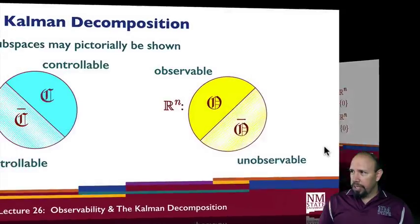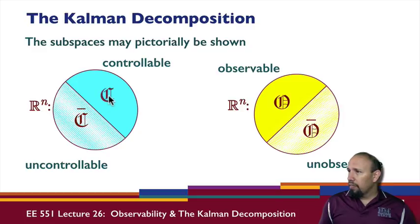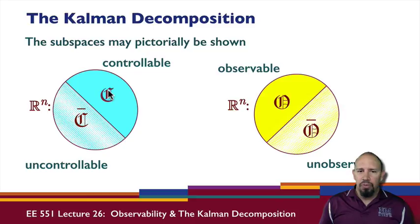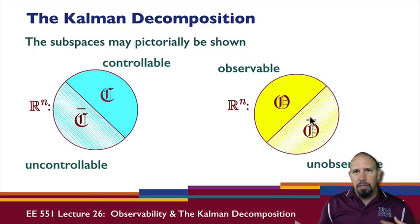We can pictorially draw these subspaces. In terms of controllability, we have the controllable subspace and the uncontrollable subspace — shown here in half, though in general they wouldn't be equal; one might be really small compared to the other. We also have the observable subspace and the unobservable subspace. They're independent properties because controllability depends on A and B, while observability depends on A and C.